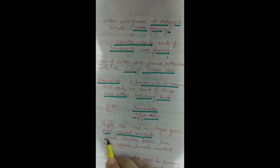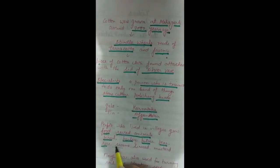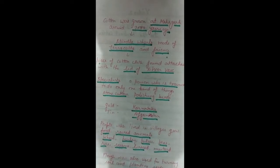Wheat, barley, pulses, peas, rice, sesame, linseed and mustard were grown by the people of Harappan civilization.